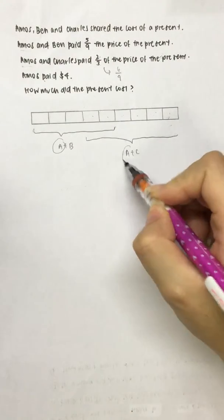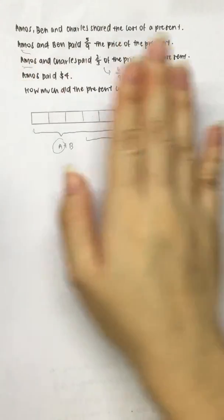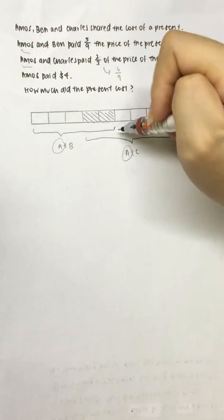You notice that Amos is a repeating subject in this fraction, so we are actually double counting what Amos's share is. This overlap here.